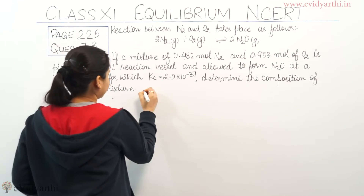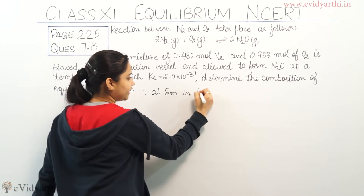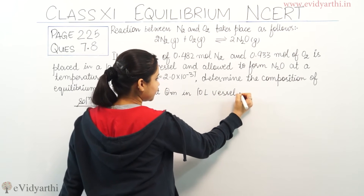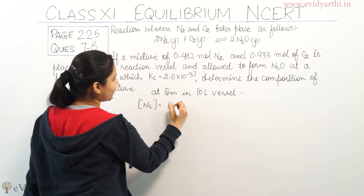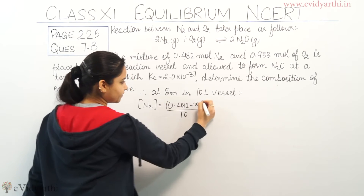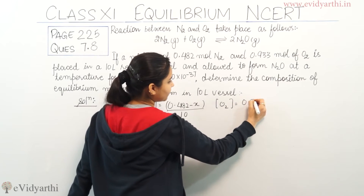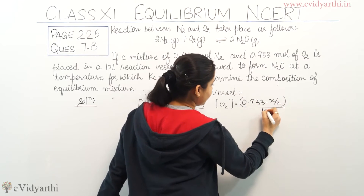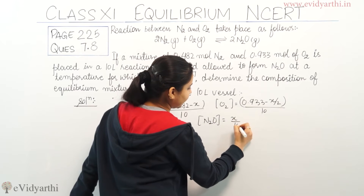Therefore, at equilibrium in the 10-liter vessel, the molar concentration of N₂ is (0.482 − X)/10, the molar concentration of O₂ is (0.933 − X/2)/10, and the molar concentration of N₂O is X/10.